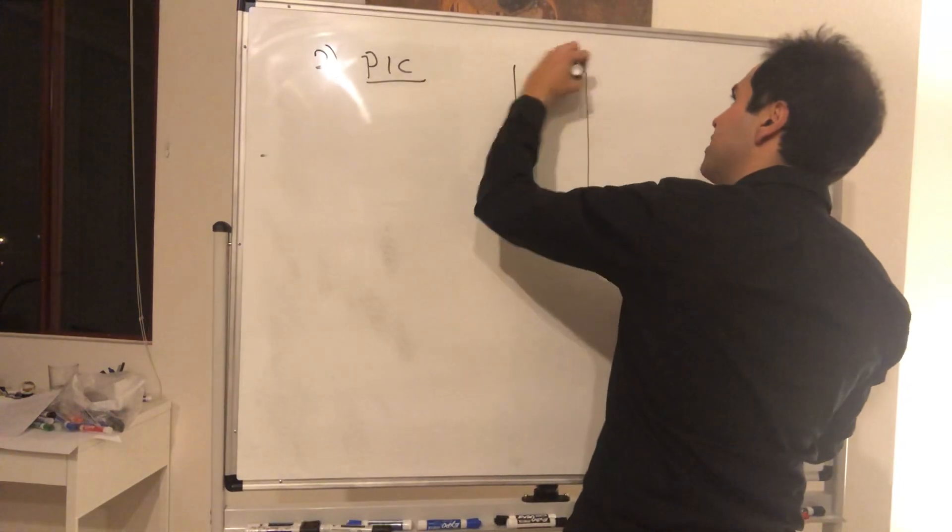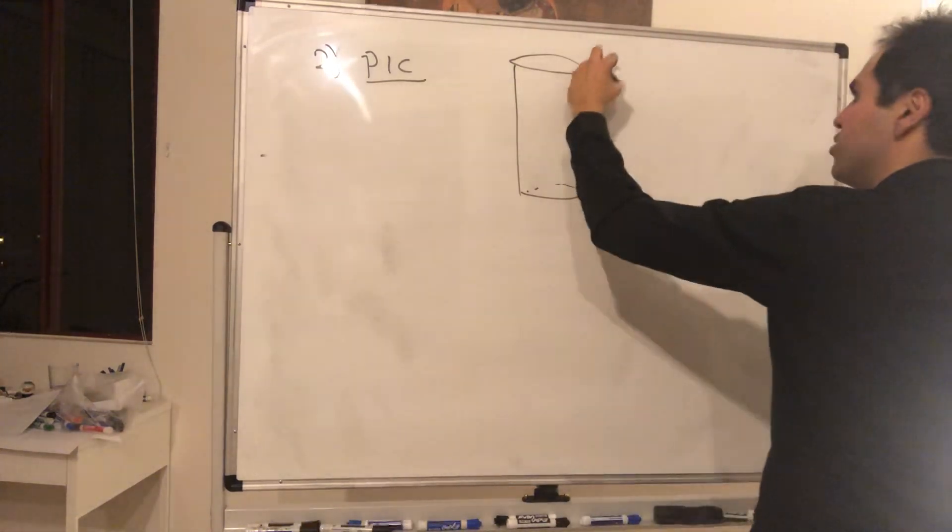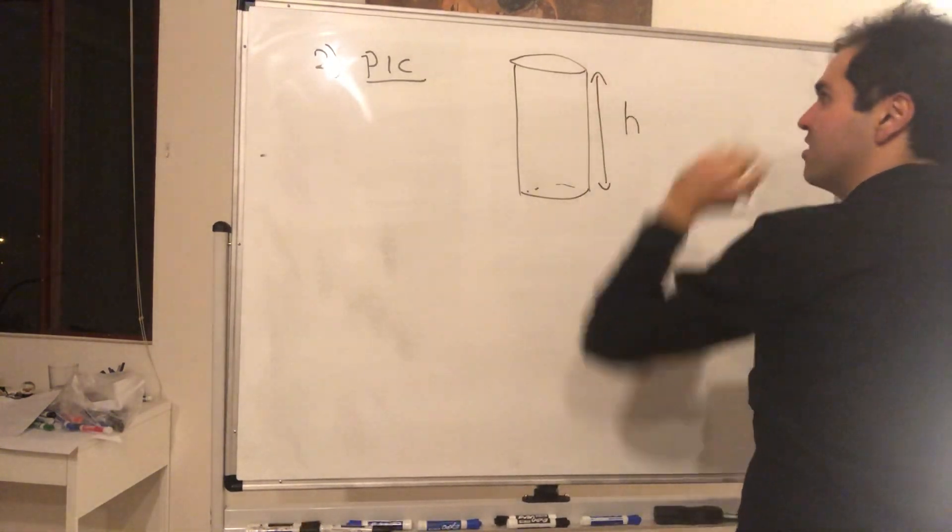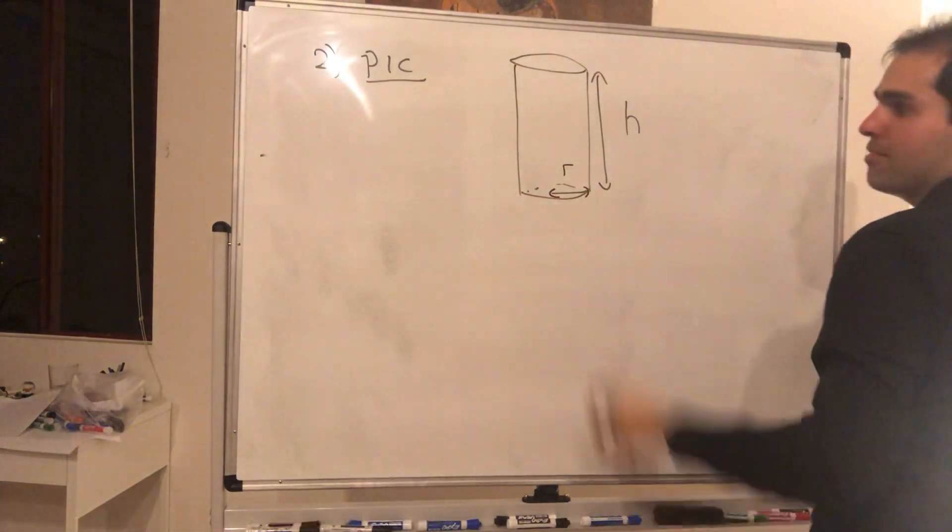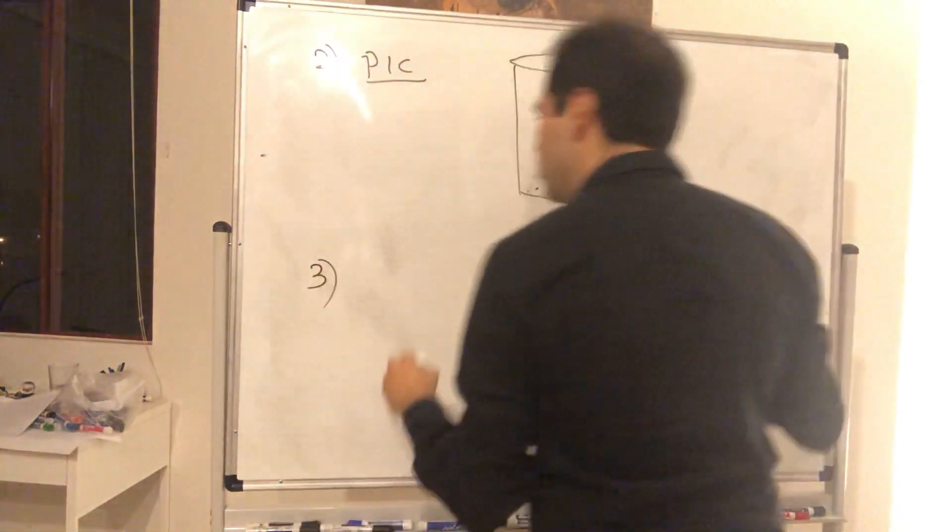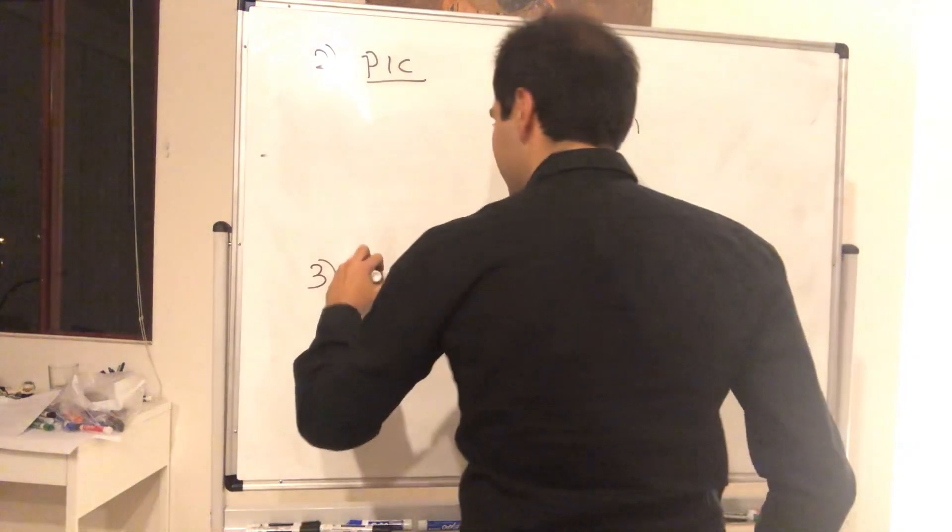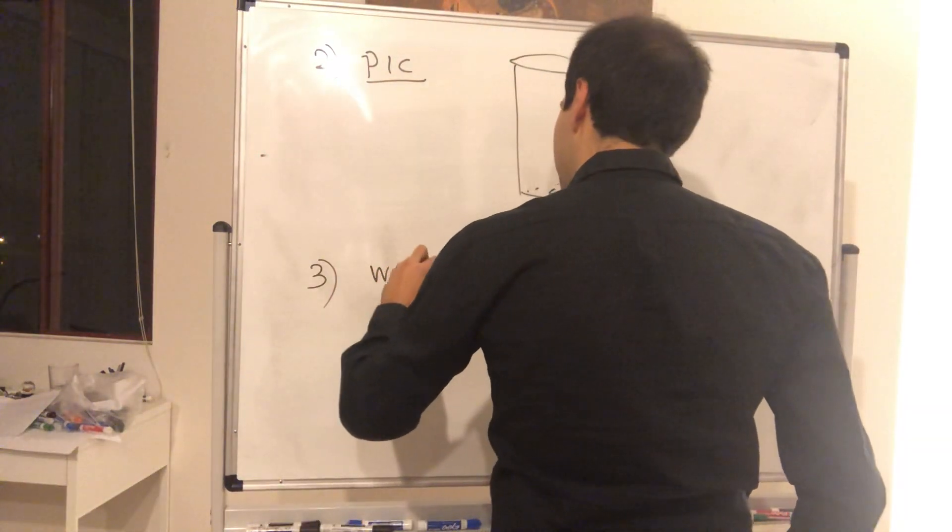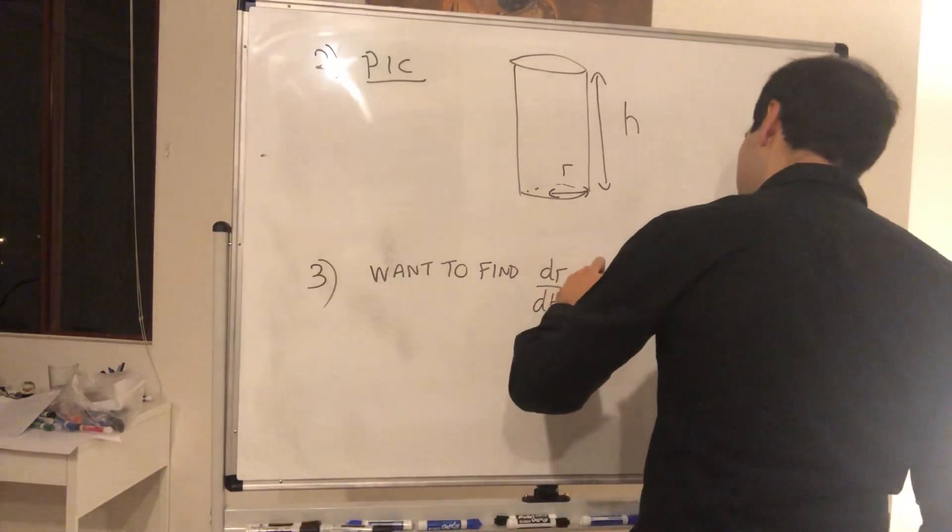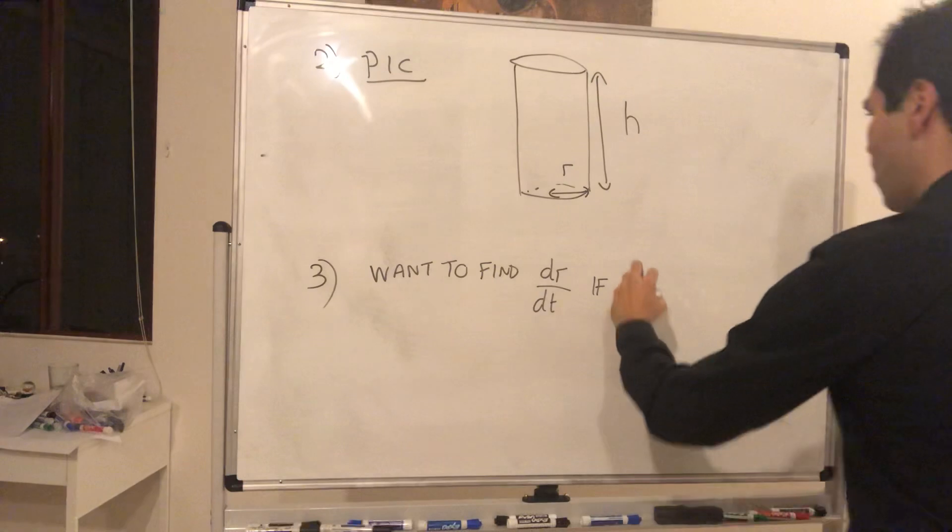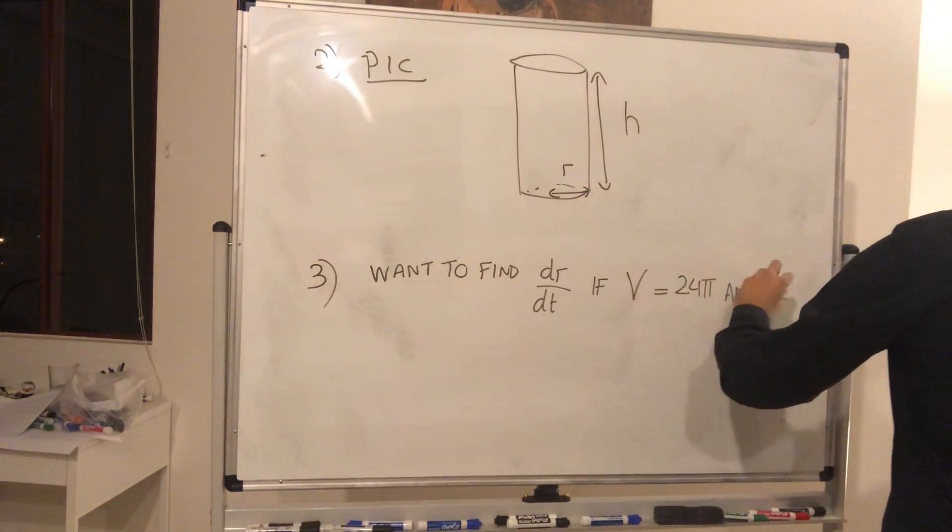Again, a cylinder, what is it? It's a disk times the height. So here is the height of the cylinder. Here is the radius and the next thing we want to figure out, so I believe the problem is asking at which rate the radius is increasing or decreasing. So we want to find dr/dt if the volume is 24π and the height is 6.